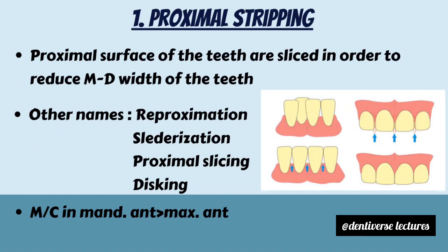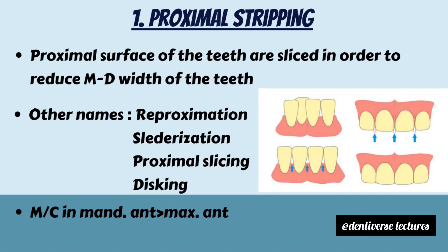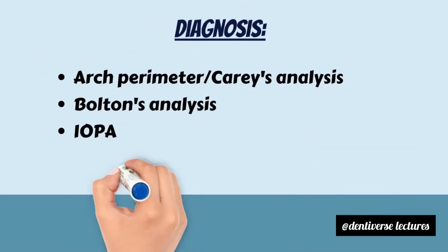What is proximal stripping? It is a method by which proximal surfaces of the teeth are sliced in order to reduce the mesiodistal width of teeth. Other names include reproximation, slenderization, proximal slicing, and disking. It is most commonly done in mandibular anteriors, then maxillary anteriors.